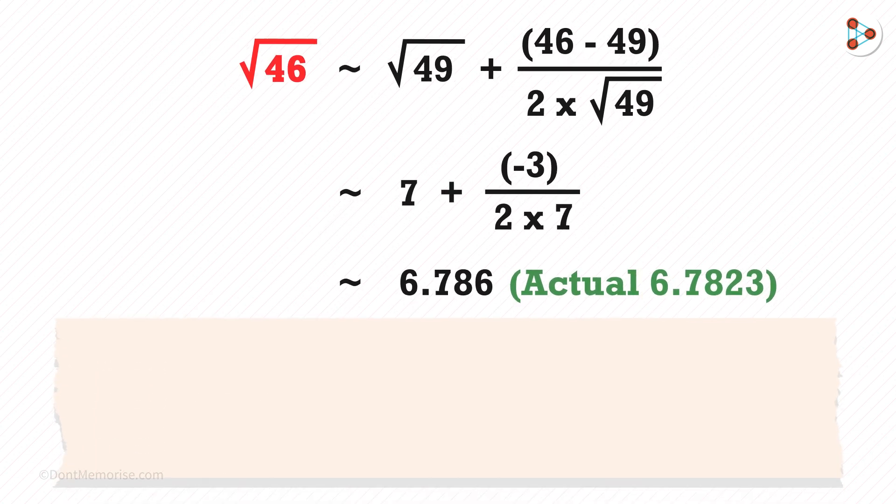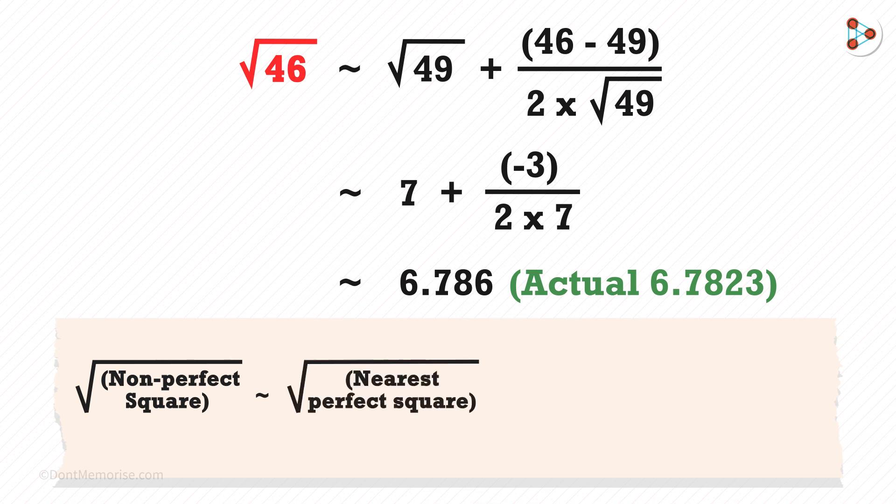So it's very easy to solve using this formula. The square root of a non-perfect square is approximately equal to the square root of the nearest perfect square plus the deviation divided by 2 multiplied by the square root of the nearest perfect square.